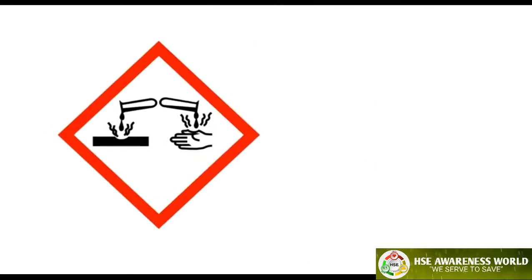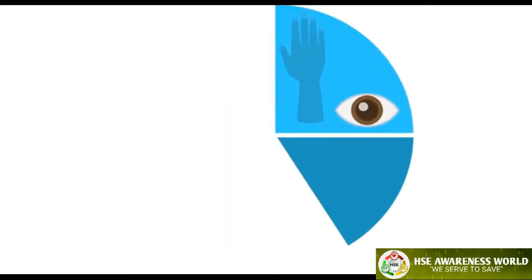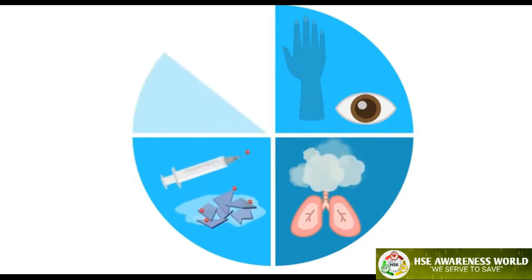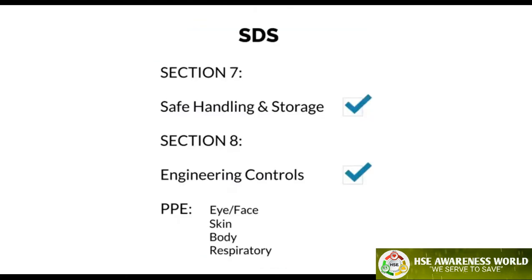The corrosive symbol is found on strong acids and alkalis that cause severe skin, eye, and respiratory tract injuries, as well as metal corrosion. The critical vulnerabilities are soft tissues, inhalation, injection, and ingestion. Other considerations are listed in Sections 7 and 8 of the SDS.